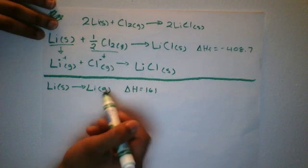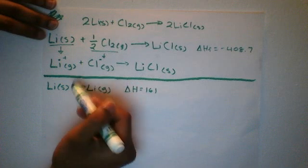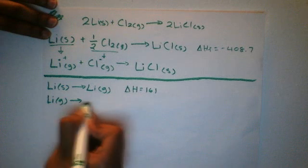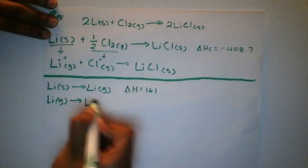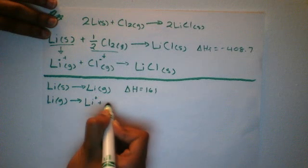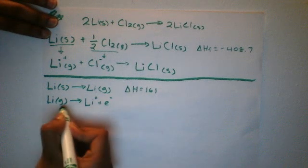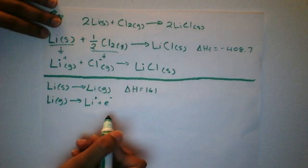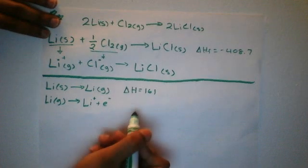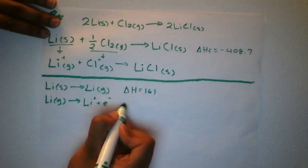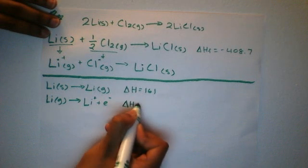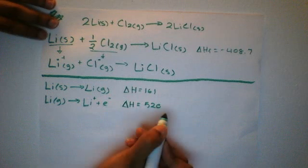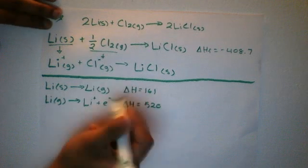Next, we get from lithium gas to the lithium cation. Lithium gas gives Li+ plus one electron — the lithium gas loses one electron, ionizing it. The energy for this is the first ionization energy for lithium, and delta H equals 520 kJ. Now we have our Li+ as needed.